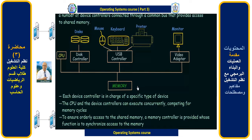So from this diagram we can understand the basic structure of how things are arranged. First we have the CPU, then the CPU along with the disk controllers — responsible for the working of each device — are all connected via a common bus. That bus is connected to the memory controller, which takes care of how memory is shared between all devices for proper and smooth working.